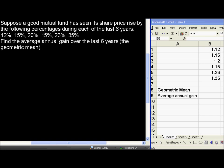Suppose a good mutual fund has seen its share price rise by the following percentages during each of the last six years: 12%, 15%, 20%, 15%, 23%, and 35%. Find the average annual gain over the last six years, and we'll use the geometric mean.